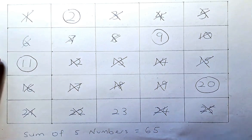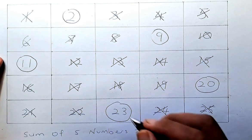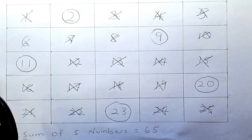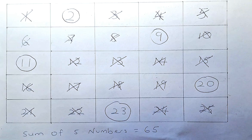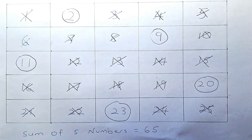At the last number, no other choice, you have to take 23. So if you add the 5 numbers that you have chosen, 11, 2, 9, 23, and 20, add them up and I guarantee you the total is going to be 65.